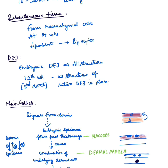The embryonic dermoepidermal junction (DEJ) resembles the mature DEJ with all its structures, but these structures are completely formed by the 12th week — the third month. As development progresses, the embryonic DEJ acquires rete ridges and dermal papillae like those of the adult DEJ.